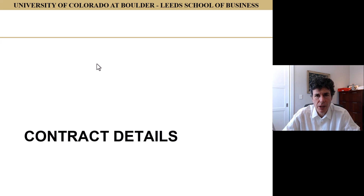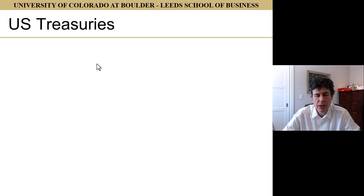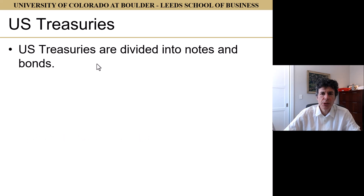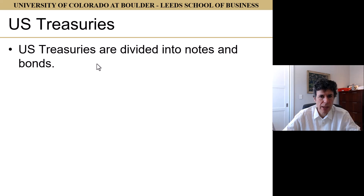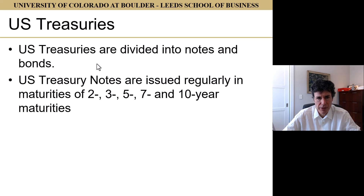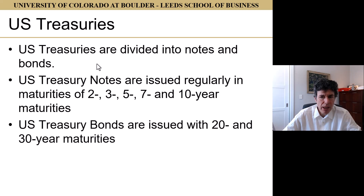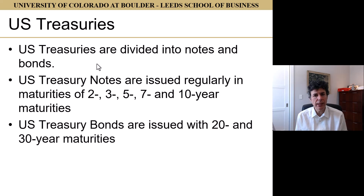First, we need to talk a little bit about what bonds are. U.S. Treasuries are somewhat artificially divided into notes and bonds. There are some other Treasuries as well — Treasury bills, inflation-protected securities, floating rate notes, and so on — but we're not interested in those right now. U.S. Treasury notes are issued regularly in maturities of 2, 3, 5, 7, and 10 years. Treasury bonds are issued with 20- and 30-year maturities. These are issued weekly or monthly, and the only difference between notes and bonds is that notes are shorter-dated and bonds are longer-dated. These are all semi-annual coupon instruments.